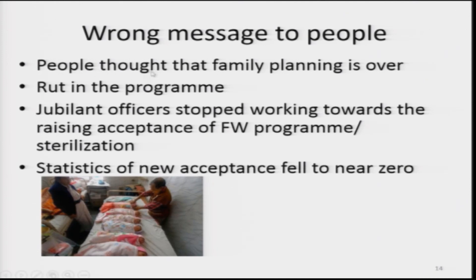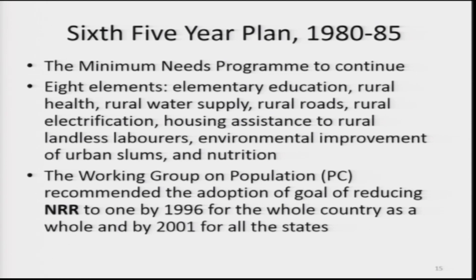This sent a wrong message and people thought family planning was over. Acceptance statistics of family planning fell to near zero. In the Sixth Five Year Plan (1980–85), the program was revived. The minimum needs program continued with 8 elements: elementary education, rural health, rural water, rural roads, rural electrification, housing assistance to rural landless laborers, environmental improvement of urban slums, and nutrition. The working group on population recommended the goal of reducing NRR to 1 by 1996 for the country as a whole, and by 2001 for all states of India.